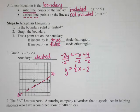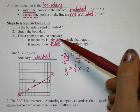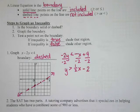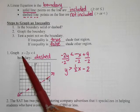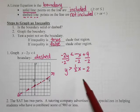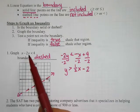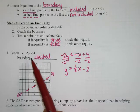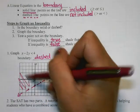Now we have to decide whether to shade. It says test a point not on the boundary. An easy point to test is the origin, zero zero. If I plug zero zero into this equation — whether the original or the rearranged, it doesn't matter as long as you rearranged correctly — I get zero minus 2 times zero, or zero is less than 4. Is that true? Yes, so I want to shade to include that point.